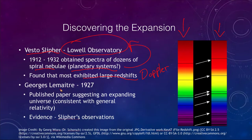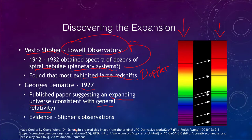Georges Lemaître in 1927 published a paper suggesting an expanding universe — something consistent with general relativity, although Einstein had added in a cosmological constant to make it so the universe did not necessarily expand. It was something that general relativity could have predicted, and he used Slipher's observations as his evidence. This was some of the very earliest evidence of the expansion of the universe.